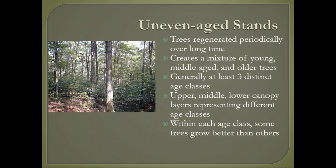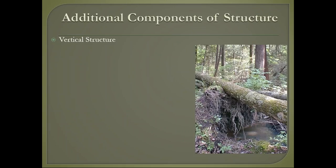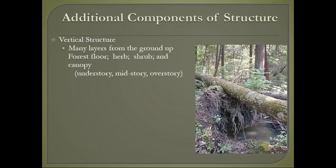In every age class, trees grow at different rates, and some suppressed trees can be released. Regarding vertical structure, we have the upper canopy, mid canopy, and understory—the up-and-down layers of the forest. We also consider the forest floor herbaceous layer, which includes ferns, ephemeral plants, and flowers. A shrub layer might include viburnums or blueberries. The understory is made up of regeneration that will become trees. Horizontal structure refers to diversification across the landscape—whether there are open gaps, dense skips, and varying species composition.